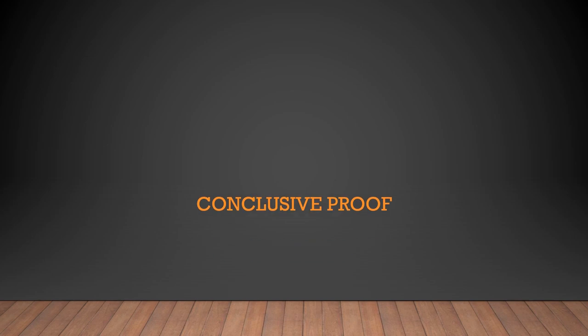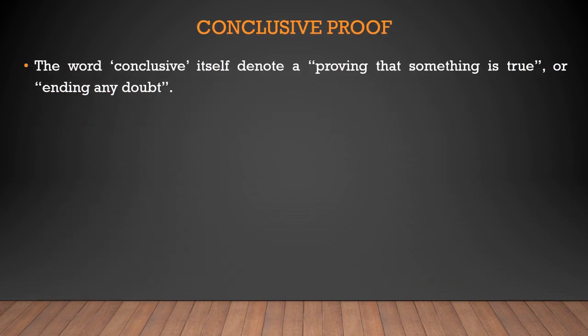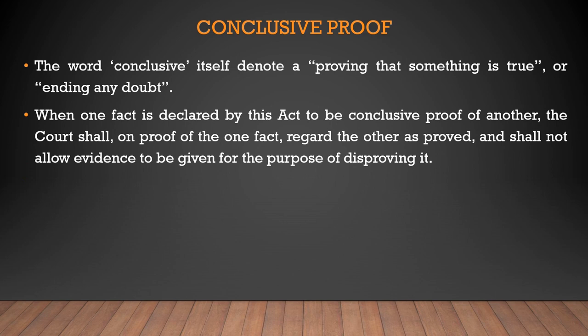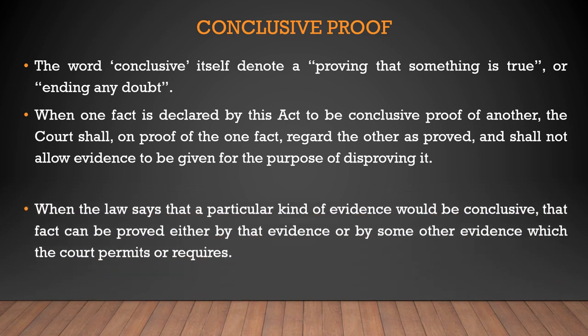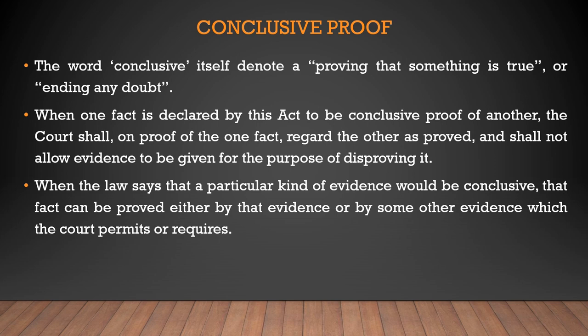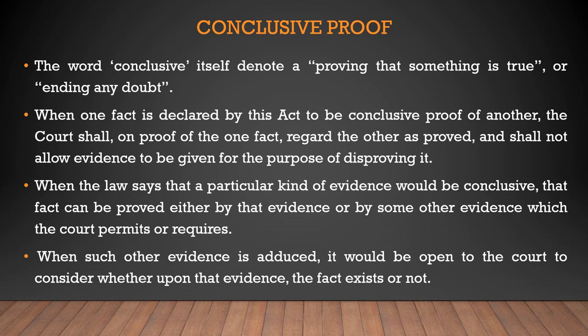The next important term is conclusive proof. The word 'conclusive' itself denotes approving that something is true or ending any doubt. When one fact is declared by this act to be conclusive proof of another, the court shall, on proof of one fact, regard the other as proved and shall not allow evidence to be given for the purpose of disproving it. When the law says that a particular kind of evidence would be conclusive, that fact can be proved either by that evidence or by some other evidence which the court permits or requires. When such other evidence is adduced, it would be open to the court to consider whether upon that evidence the fact exists or not.